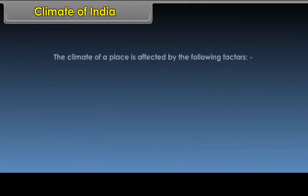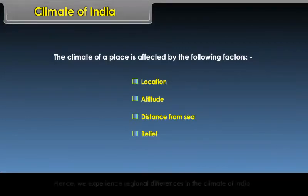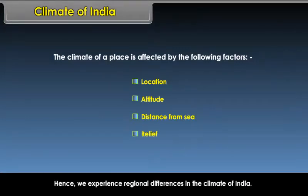The climate of a place is affected by the following factors: location, altitude, distance from sea, and relief. Hence, we experience regional differences in the climate of India.